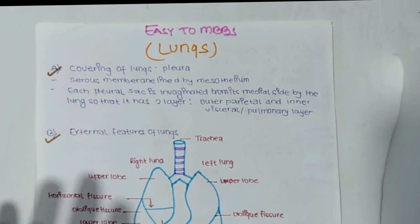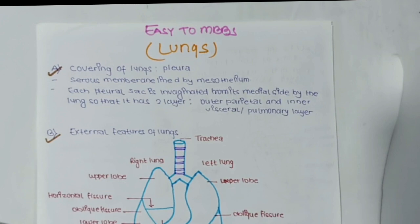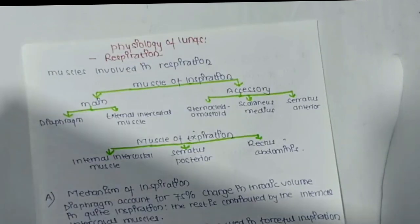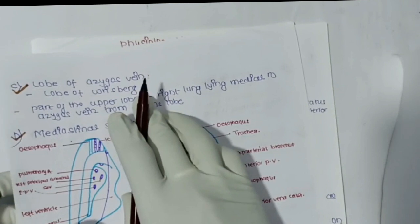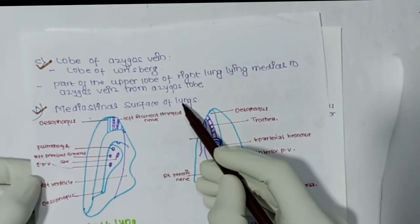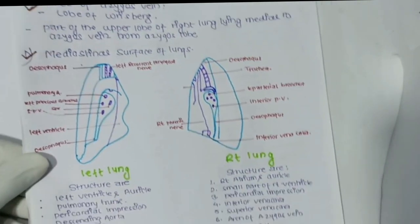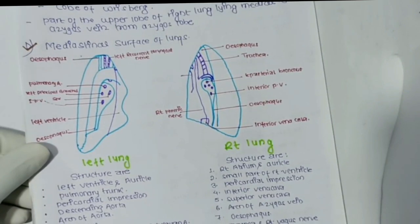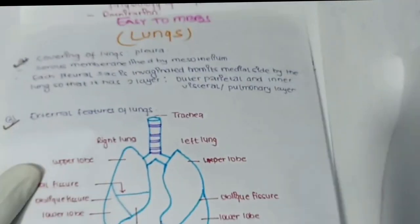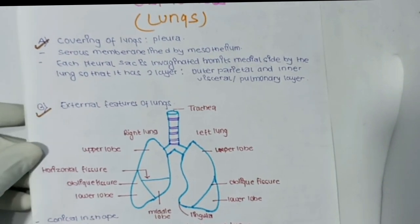In this topic we have divided the lungs into five parts: first is the covering of lungs, that is pleura; second is external features of lungs; third is the lobe of azygous vein; fourth is the mediastinal surface of lungs; and last but not least is the root of lungs.